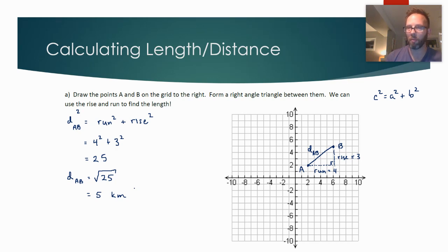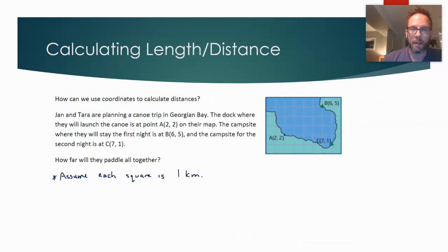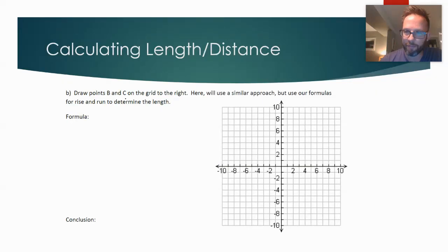Now, this first one wasn't so bad because we could easily plot those points and it was really easy to see the rise and run. But that's not always going to be true. The numbers could be big, we could have decimals or fractions, and it might just not be practical to graph. So what we need is a formula that we can just use all the time without having to make a graph. So we're going to do that for points B and C. Point B is 6,5 and point C is 7,1.